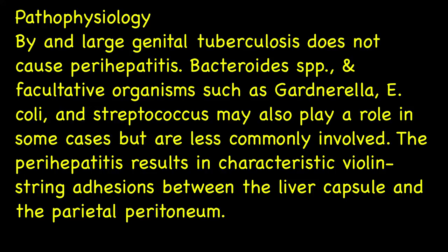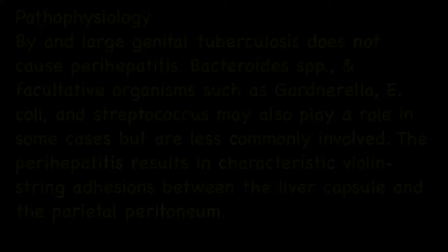Bacteroides and facultative organisms such as Gardnerella, E. coli, and Streptococcus may also play a role in some cases but are less commonly involved. The perihepatitis results in characteristic violin string adhesions between Glisson's capsule and the parietal peritoneum.